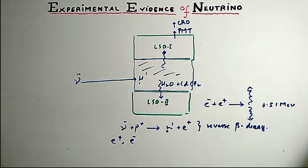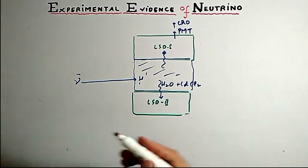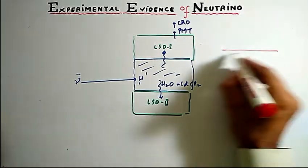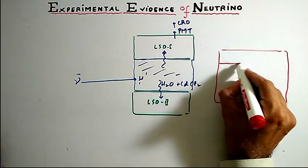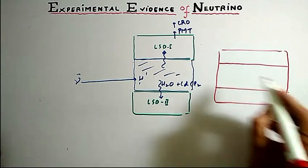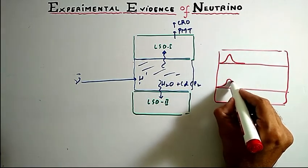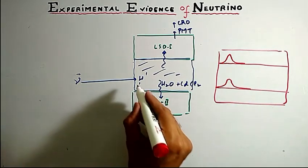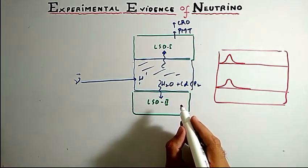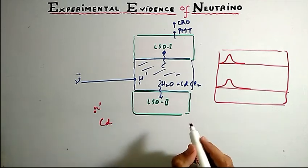A small pulse was recorded on the screen of CRO. The neutron traveled in the solution and finally neutron was captured by cadmium.